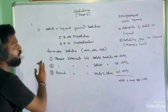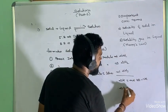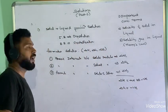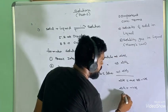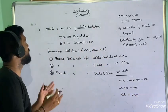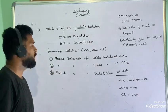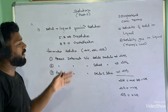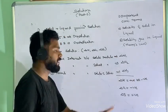Formation of solution is a spontaneous process, so ΔG is negative. Entropy (ΔS) increases when a solution forms because when solute is added to solvent, the disorderedness of the system increases. So ΔS is positive.